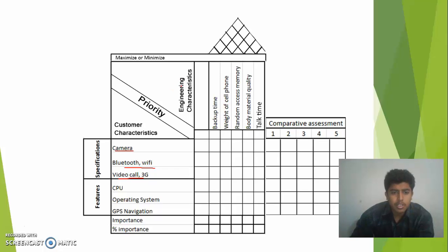From the engineering or design characteristics point of view we have: backup time, weight of cell phone, random access memory, body material quality and talk time. Here we are going to perform the correlation between these characteristics. We are going to write here which of them company wants to maximize and which of them company wants to minimize. Here we are going to write the priorities of how our customer weighs each feature.